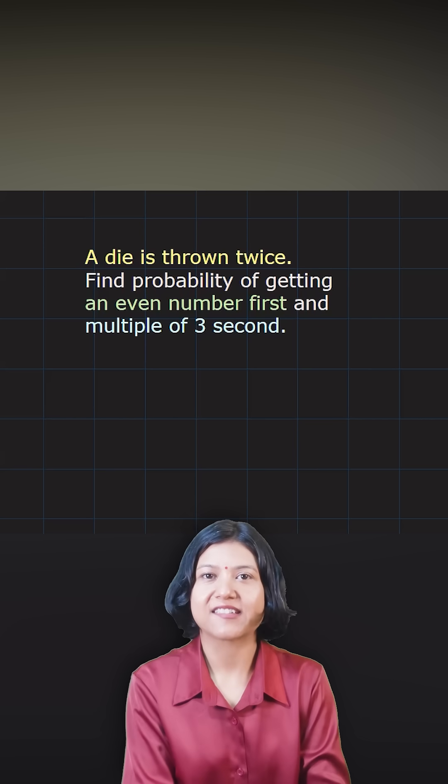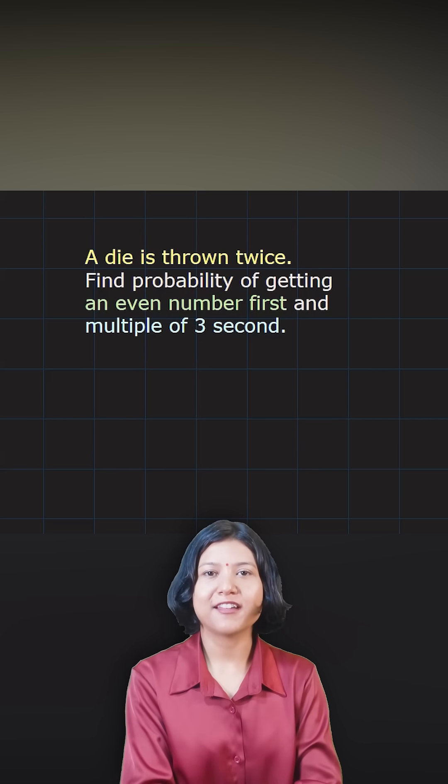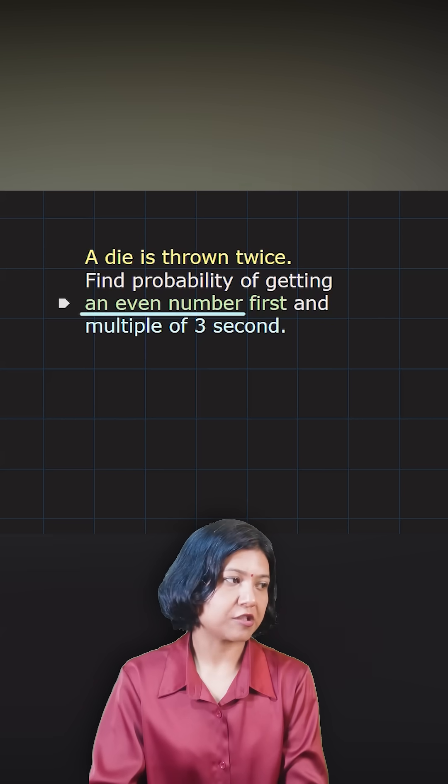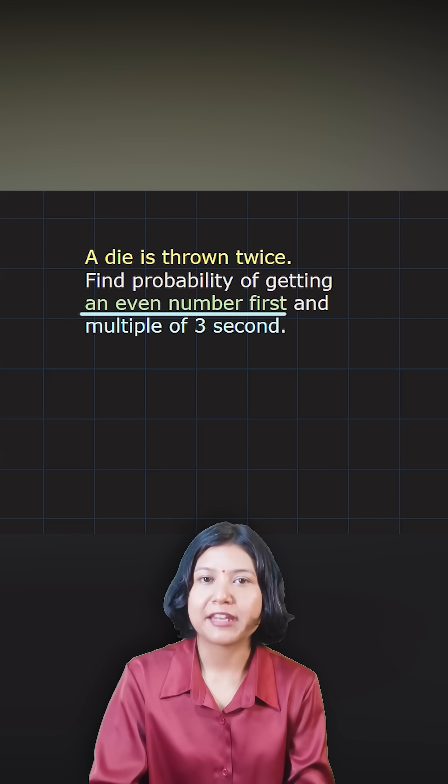Die is the singular form of dice. You have one die and then you are throwing it twice. Understand the scenario. You want to get an even number first. What is the probability of getting an even number?